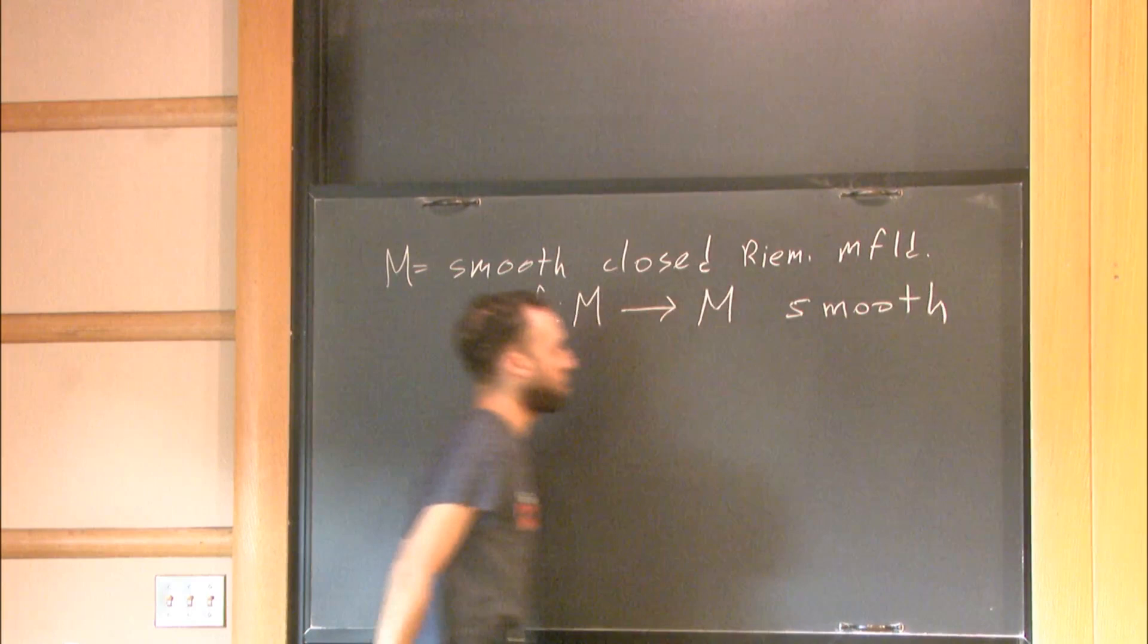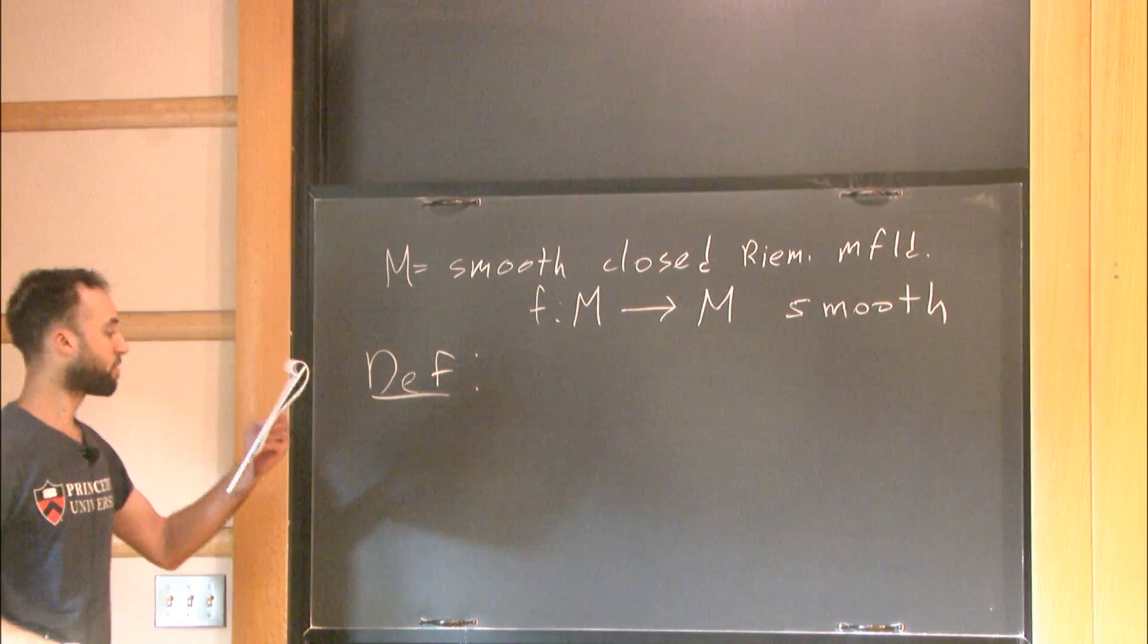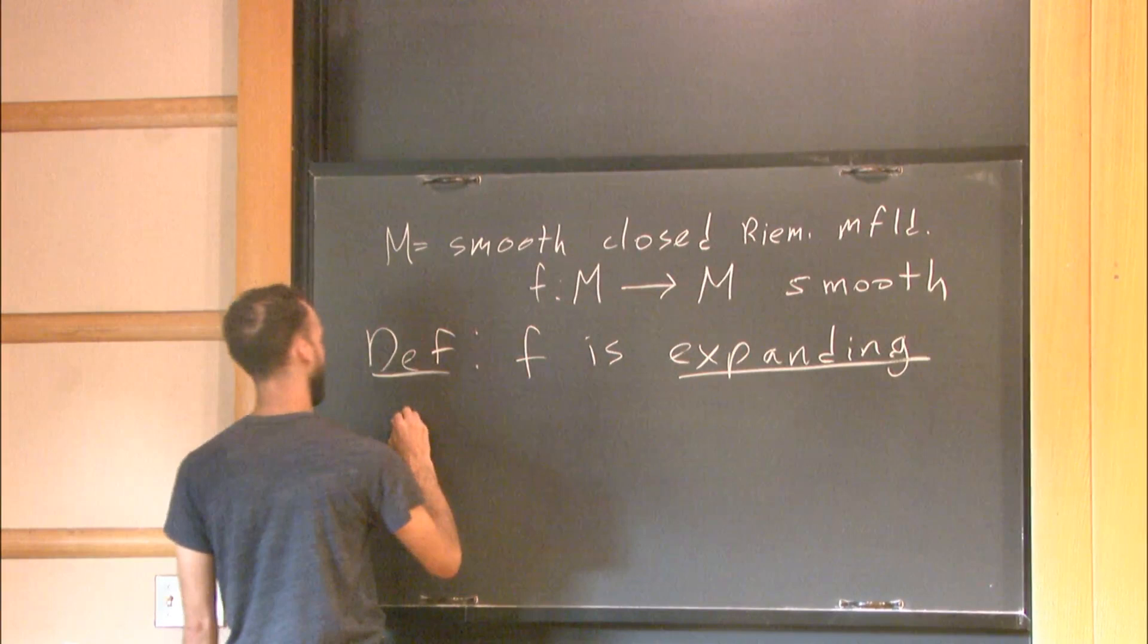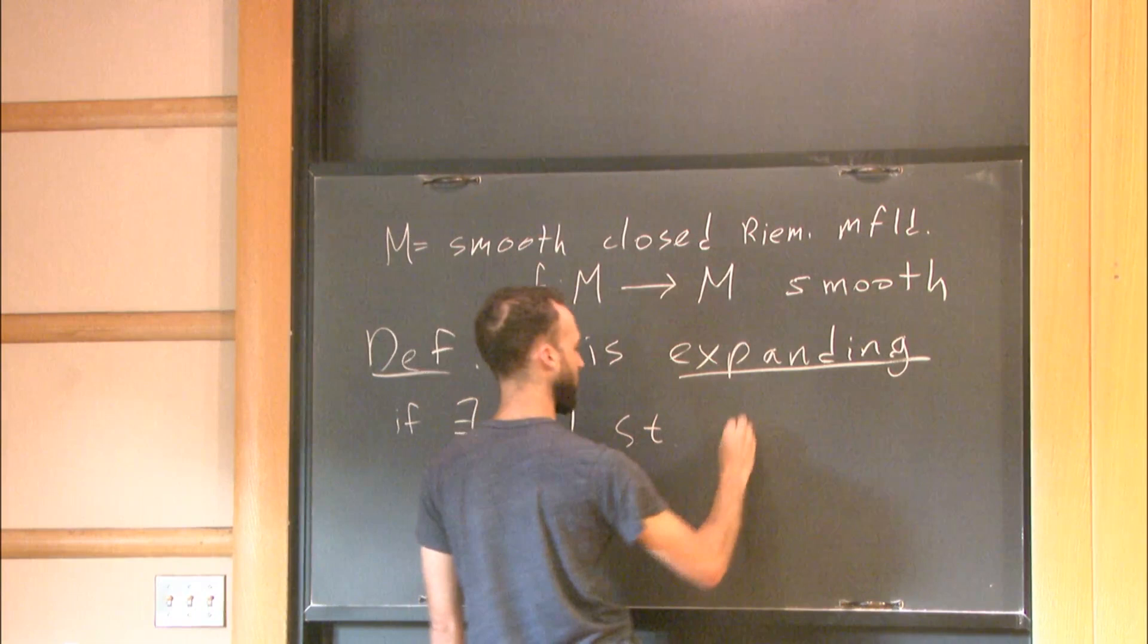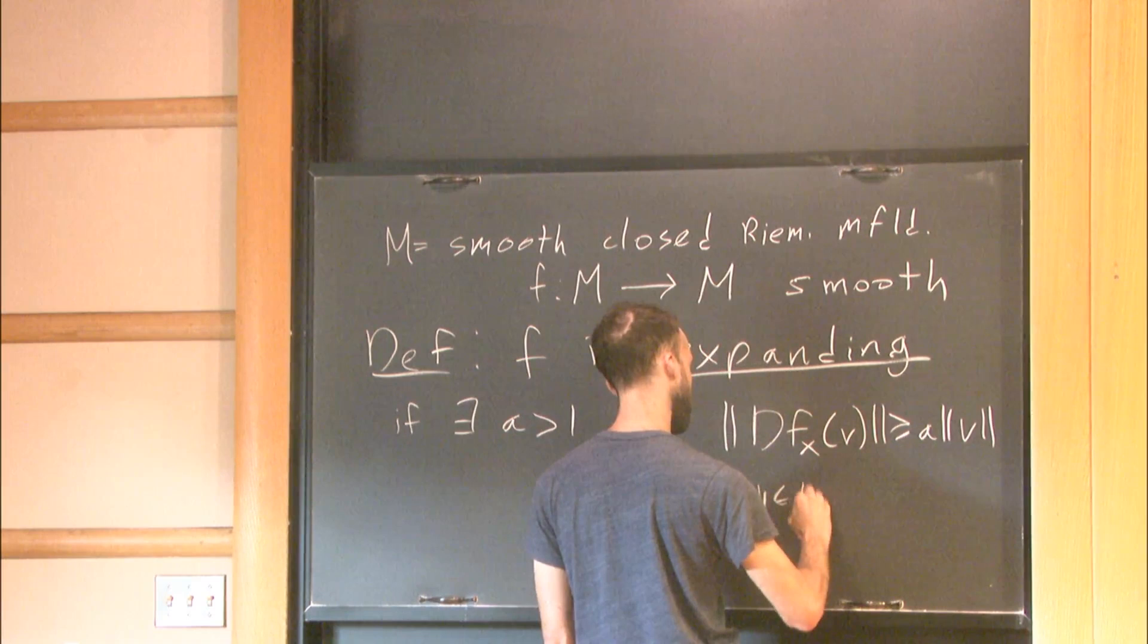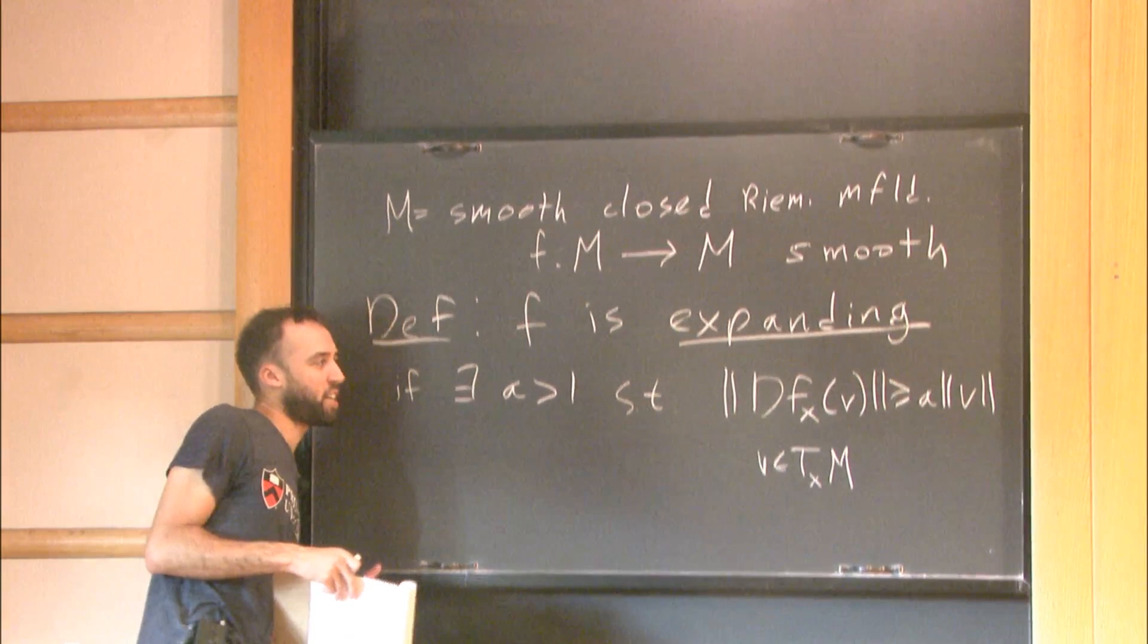So got some closed Riemannian manifold and a smooth map, and I'm going to make a definition. F is expanding if there exists a greater than 1 such that if you look at the norm of the derivative of f acting on any tangent vector, it is strictly increased by a factor of a.